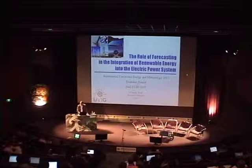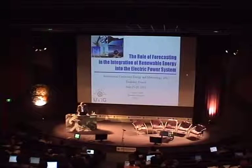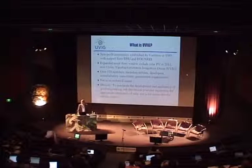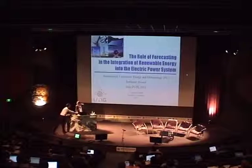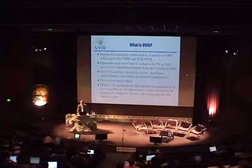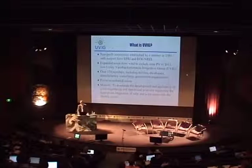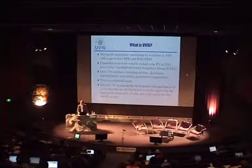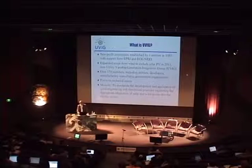A number of people have asked me about the name UVIG. We used to be the Utility Wind Integration Group, but a couple of years ago our members decided we should add solar. We spent a long time figuring out how to change our name. One popular suggestion was the Utility Solar and Wind Integration Group — but that's USWIG, which doesn't have quite the right connotation, so we went with the Utility Variable Generation Integration Group. That's how we went from UWIG to UVIG.